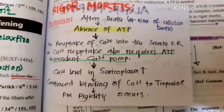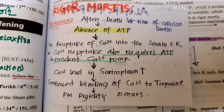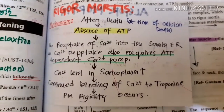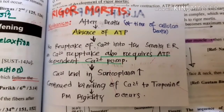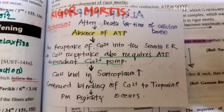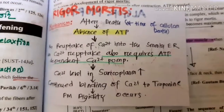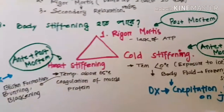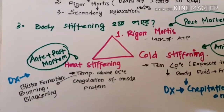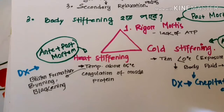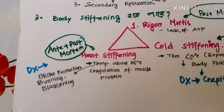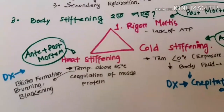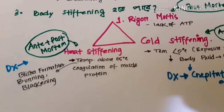When the ATP-dependent calcium pump fails, calcium accumulates in the cytoplasm. This calcium then binds to troponin C. When troponin C binding occurs, muscle contraction and stiffening result — post-mortem rigidity occurs. This is rigor mortis: a lack of ATP causes calcium to remain in the cytoplasm and bind troponin C, leading to persistent muscle stiffening.